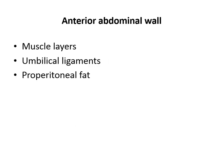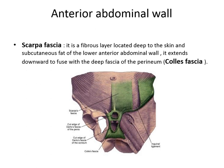We will start with the anterior abdominal wall. The anterior abdominal wall comprises the muscle layers, umbilical ligaments, and properitoneal fat. I will discuss each of them. First, I have a few points about the superficial fascia of the abdomen — the Scarpa fascia. This is located in the lower anterior abdomen, deep to the skin and subcutaneous fat.